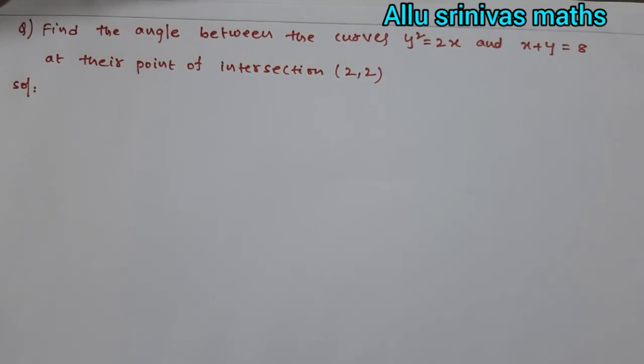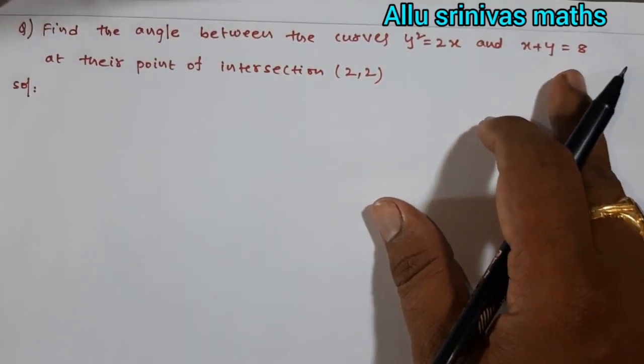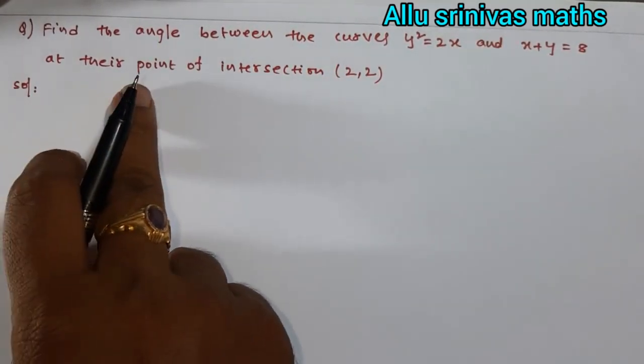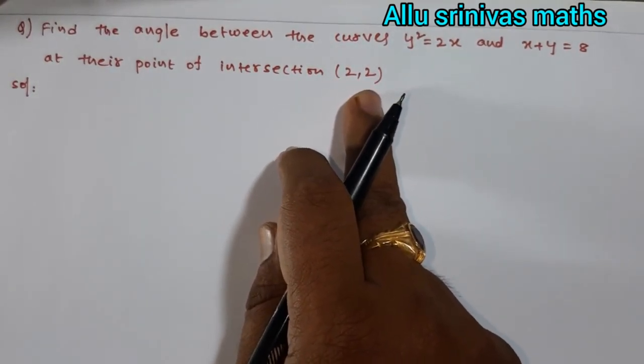The first question is find the angle between the curves y² = 2x and x + y = 8 at the point of intersection (2, 2). So we solve easily.